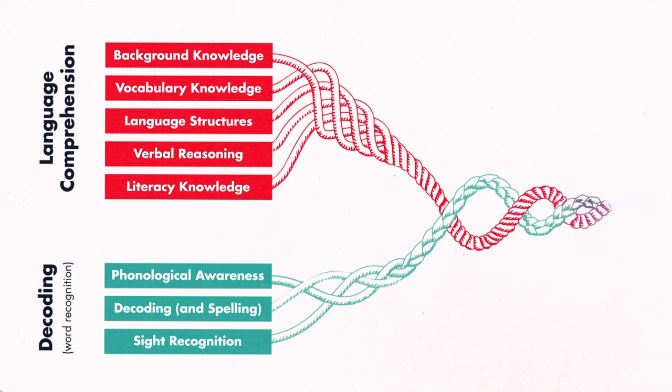As the language comprehension subskills grow and get stronger, the reader becomes increasingly strategic in their reading. At the same time, as the reader strengthens their decoding subskills, they're becoming more automatic in their reading.